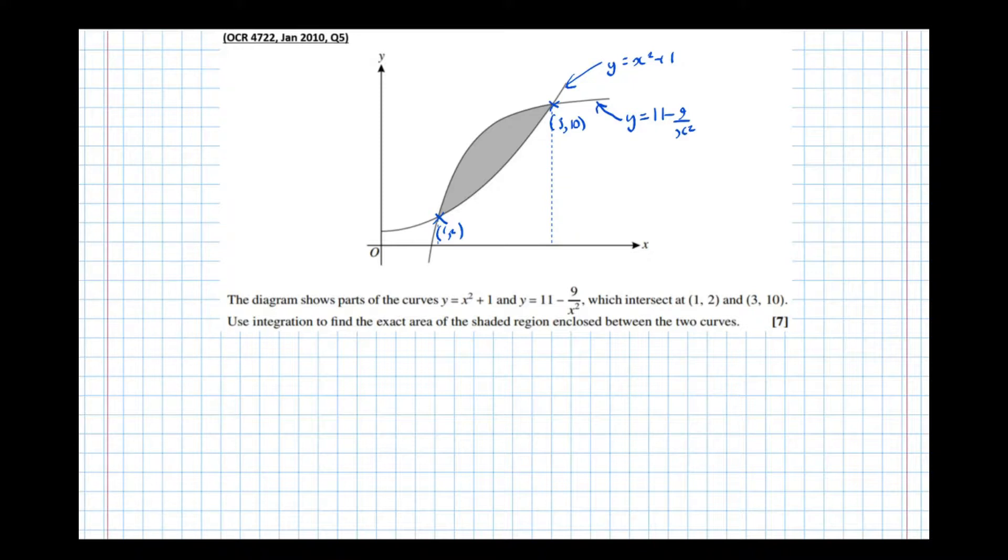So to find the area under the uppermost of the two curves, we find the integral of 11 minus 9 over x squared, minus 9, x to the minus 2. Between the two limits, 3 and 1, the x coordinate is 3 and 1 at the two boundary points with respect to x.